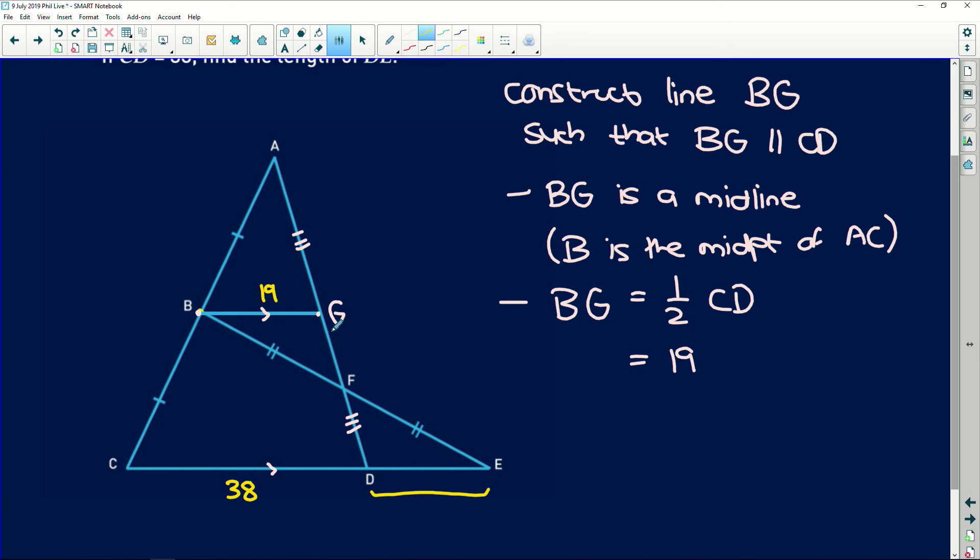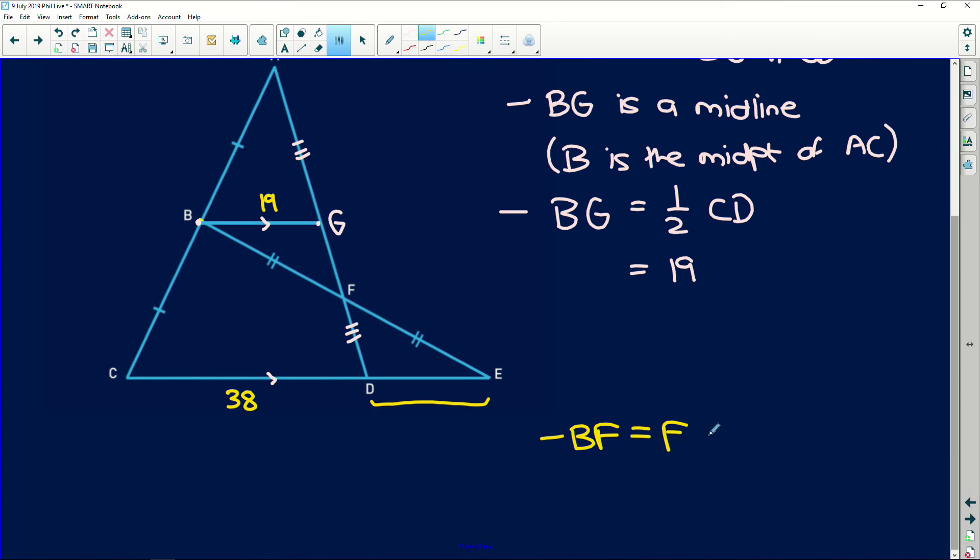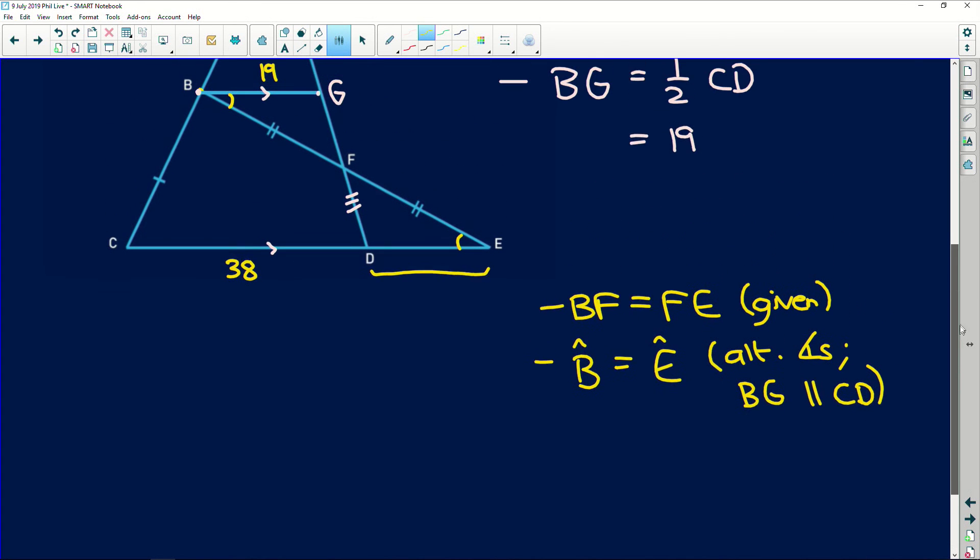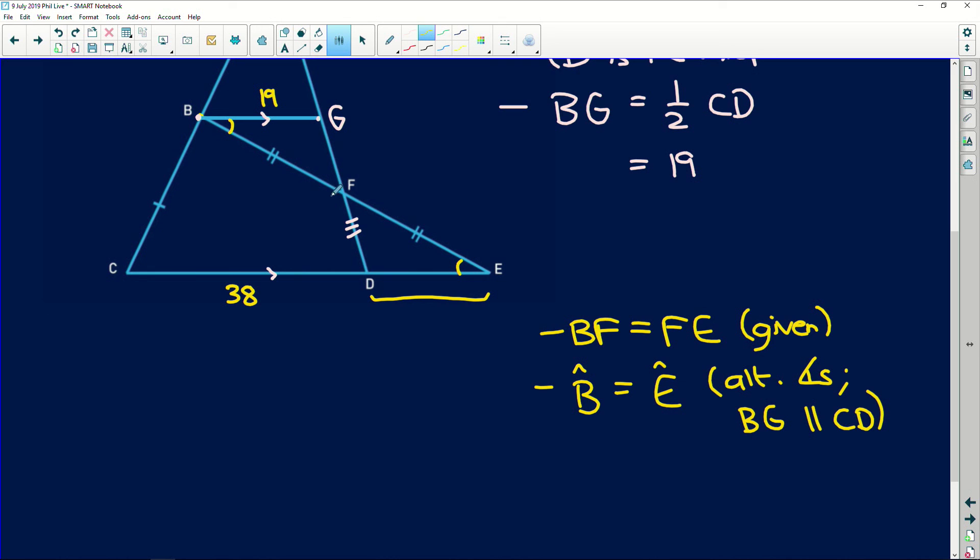So how does that help us? Well, let's look at this diagram. We now have information here and here. Firstly, we've got that BF is equal to FE, and that was given to us. So that's a side. Then also because we've got this parallel line relationship with a transversal, we know that this angle B here is equal to angle E. Angle B is equal to angle E. And why? Because of alternate angles. And remember your parallel lines. BG is parallel to CD. So we have a side and an angle. If we can prove another angle relationship, we already have congruent triangles. So I'm just going to say simply here that angle G is equal to angle D, which is this angle over here. And that is also alternate angles. And BG is parallel to CD.